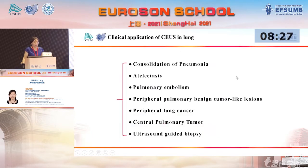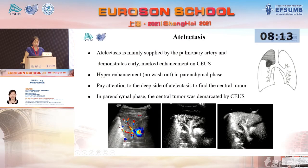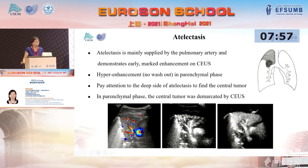Now we look at some clinical applications. Pneumonia is mainly supplied by the pulmonary artery, resulting in early homogeneous enhancement with branching vascularity and slow washout. Atelectasis is also mainly supplied by the pulmonary artery and demonstrates early marked hyper-enhancement in the parenchymal phase. We should pay attention to the deep side of atelectasis to find a central tumor.